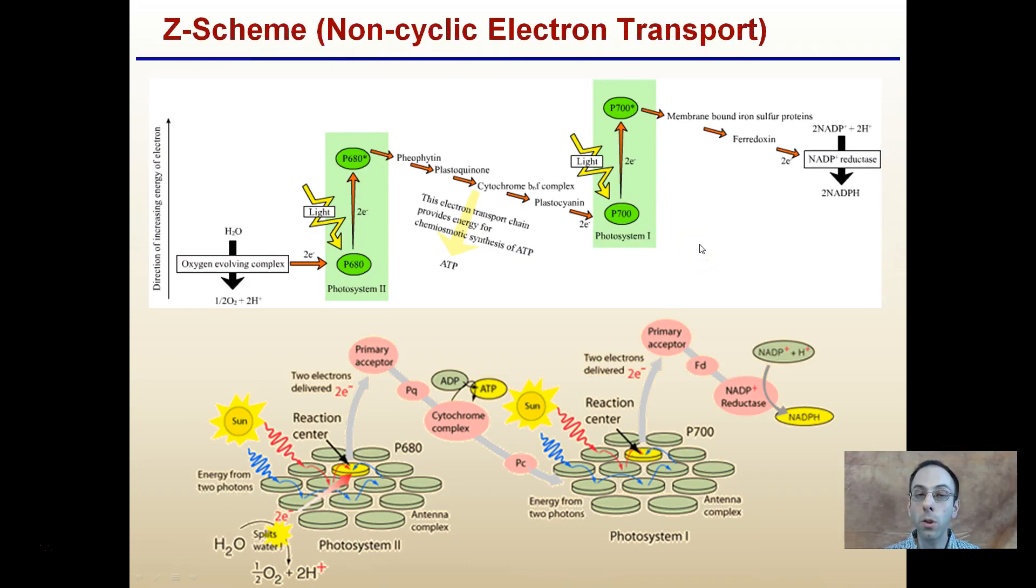This might be a little confusing right now, and that's okay, but I'm stressing the point that it's a non-cyclic electron transport. We're seeing our light energy exciting our electron. We see all these arrows going one way. We're re-exciting that electron and moving over here, producing an end product. This is non-cyclic.